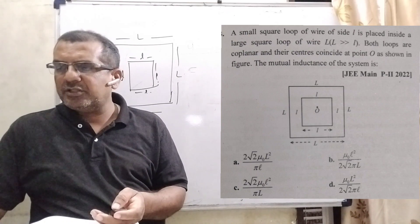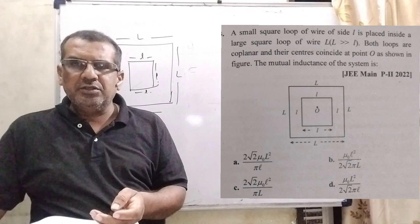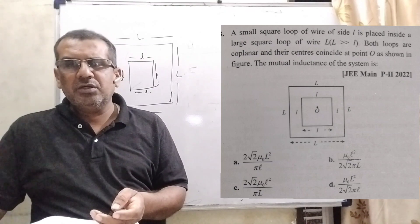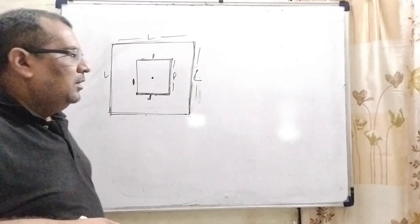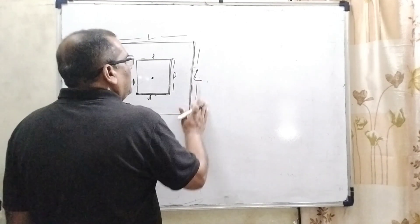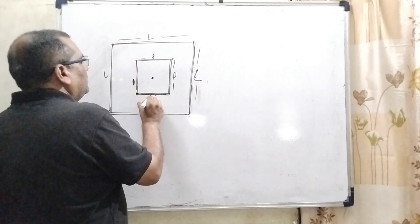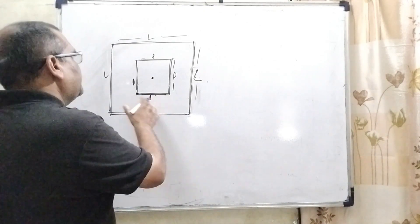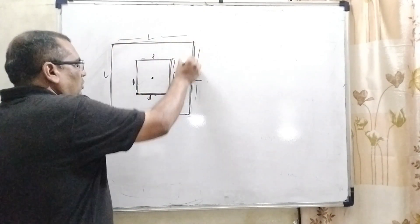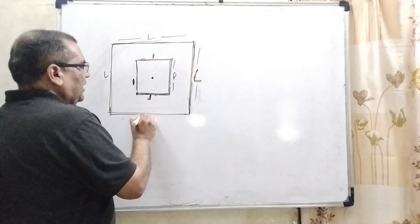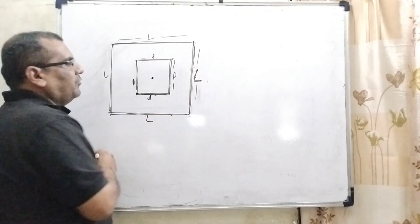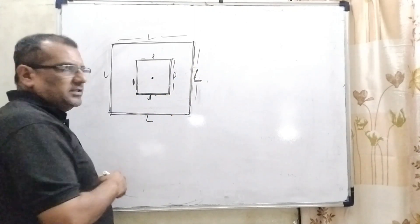Find the mutual induction of this system. This question is asked JEE Mains 2022. According to this question, here we have given a small square loop which having the length is small L, which is kept inside the bigger loop which having the length is capital L. And we have to find out the mutual induction of the system.